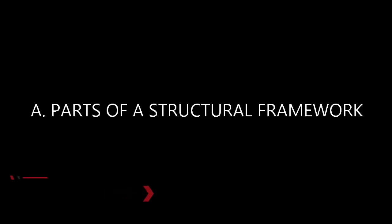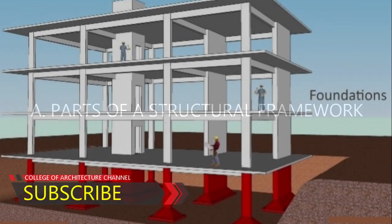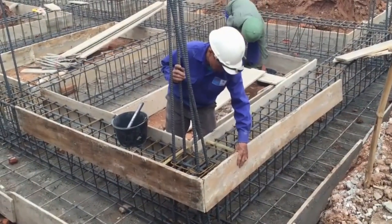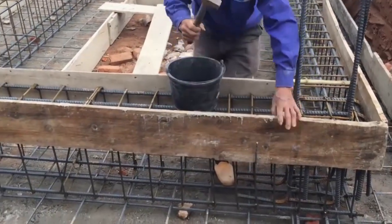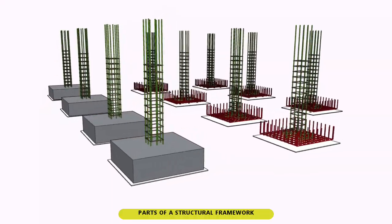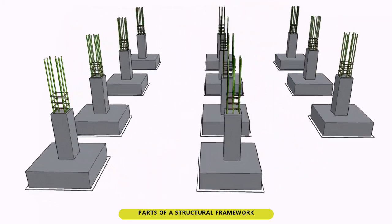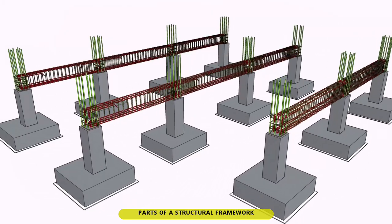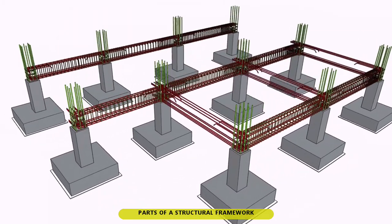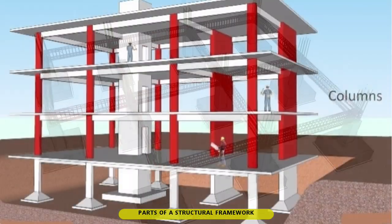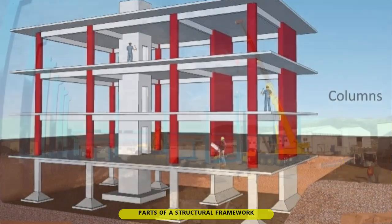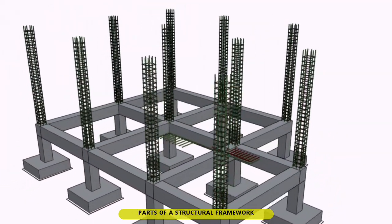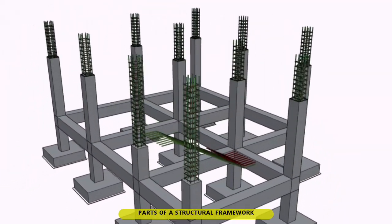Parts of a structural framework: 1. Foundation — the lowest part of a building, not accessible to men, in which the main purpose is to anchor the building into the ground and to transfer all kinds of loads being imposed on the structure itself to the bearing stratum. 2. Column — structural component of a building, transferring the loads acquired of the beam directly to the foundation.